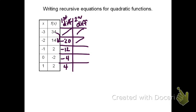For the second differences, we'll look at the change from negative 20 to negative 12. That's actually an increase of 8. To go from negative 12 to negative 4 is also increasing by 8, and so is it from negative 4 to 4.